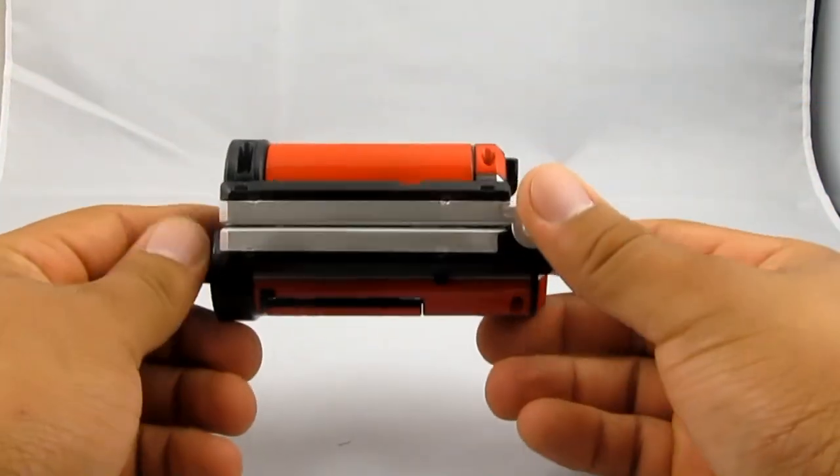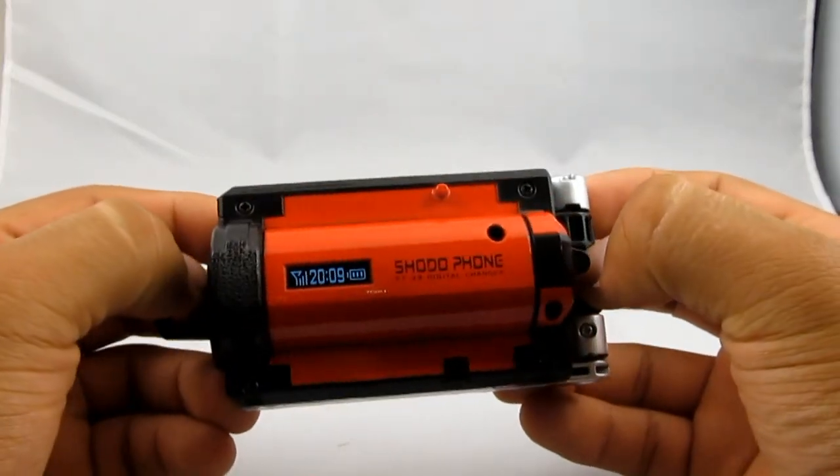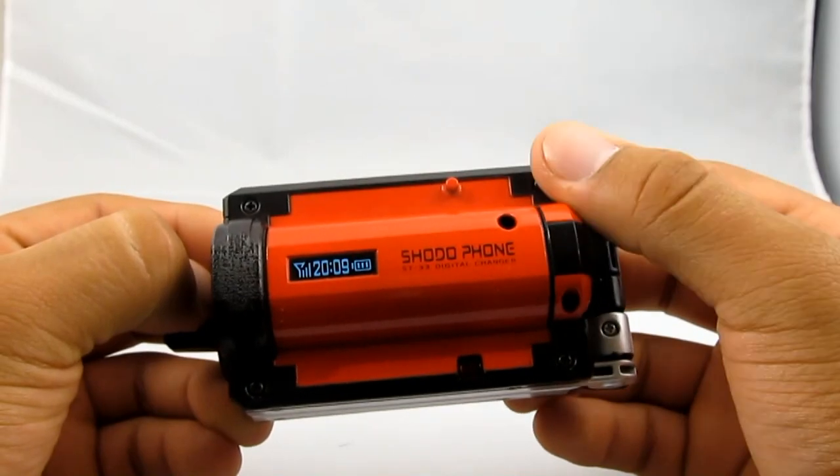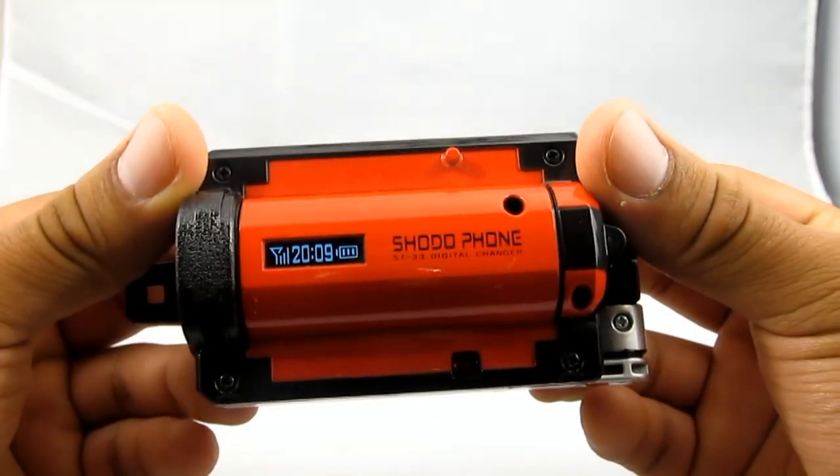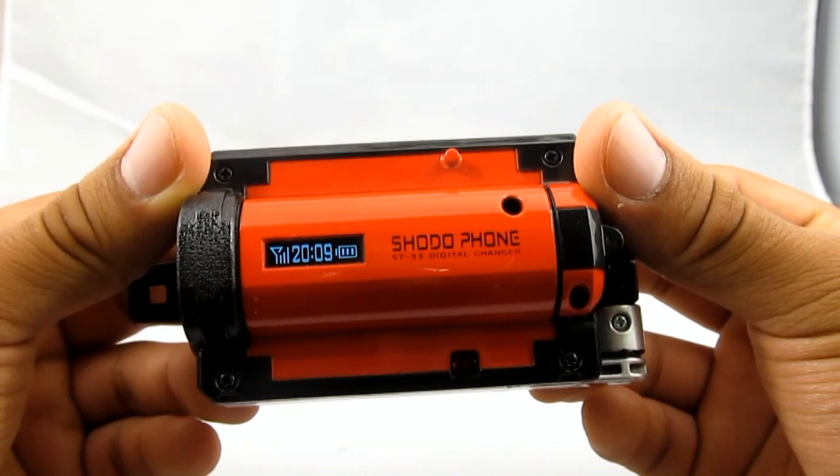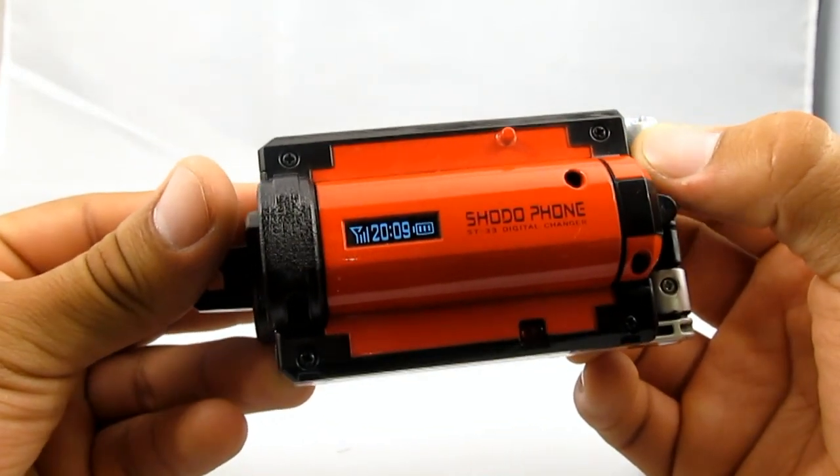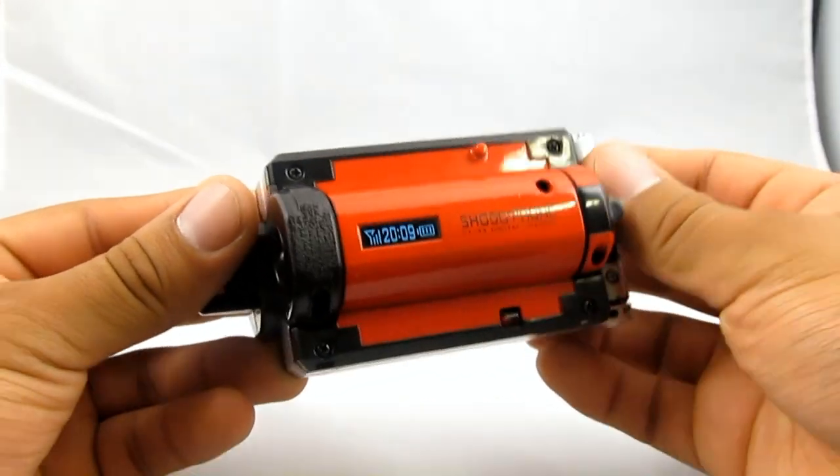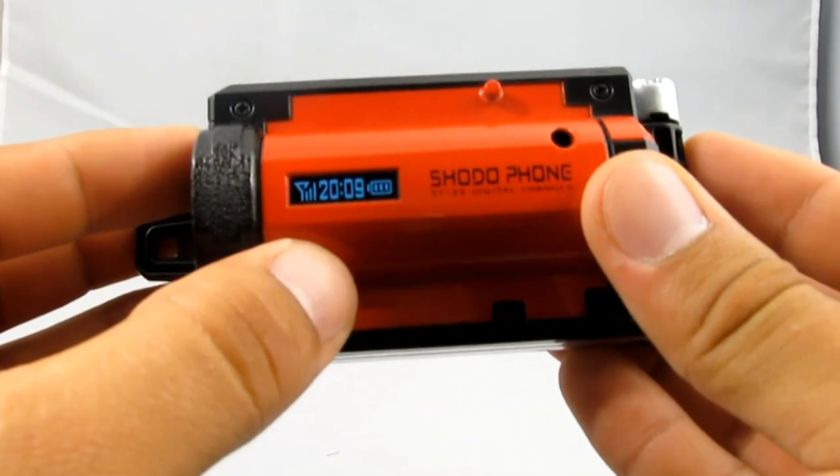So let's go over the design and paint apps on this toy. As you can see here, we have the front panel of the Shodofone. If you can read that, it says Shodofone ST33 Digital Changer. 2009 is the time. It has full bars and full battery. It basically says this show came out in 2009.